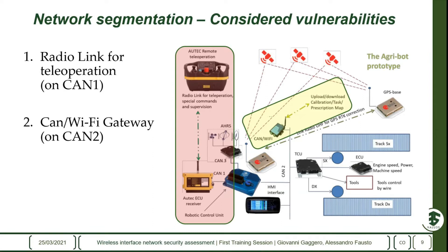We have identified two attack surfaces in the Agribot schema, shown by colored areas. The first attack surface is the radio link for teleoperation, colored red. An attacker can try to compromise this radio link or device to take control of the Agribot or inject packets on CAN bus one. The second attack surface is the CAN Wi-Fi gateway, colored yellow. This gateway can be attacked by a malicious user trying to break or bypass its HTTP interface and gain control of CAN bus two.